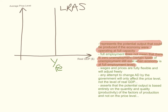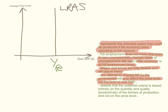Remember, full employment level of output doesn't mean there's zero unemployment, but it means there's no spare capacity in the economy. They believe that wages and prices are fully flexible and will adjust freely. Any attempt to change aggregate demand by the government will only affect the price level, and therefore not the level of real GDP.